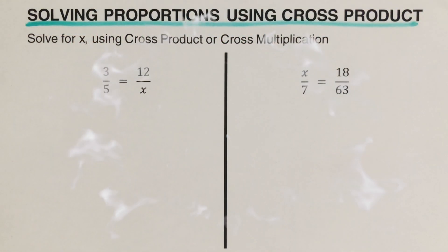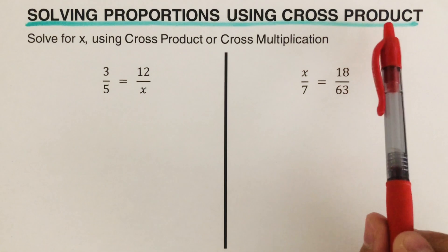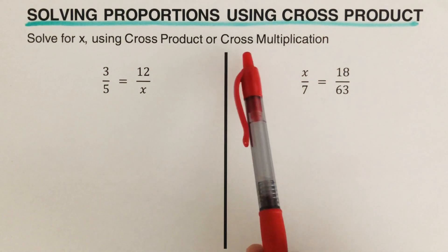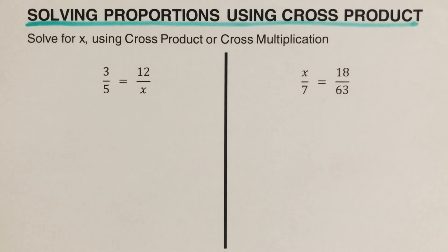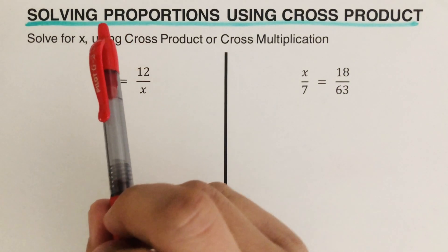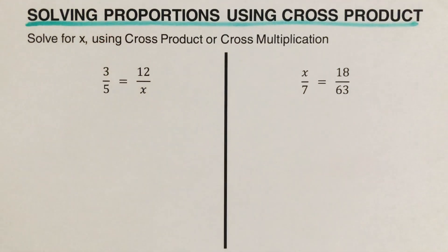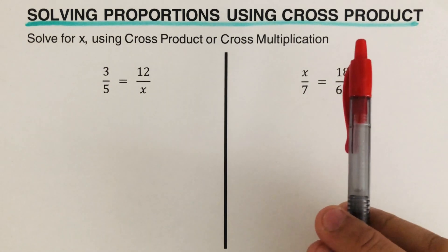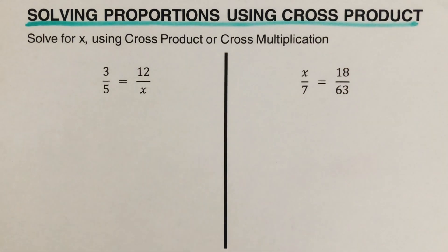Hello everyone! In this video we will be solving proportions using cross product, otherwise called cross multiplication. There are two other methods we can use to solve proportions: using the giant one and using the undoing division method. I will put the links to those videos in the description box below, and they should appear in one of the cards up here.